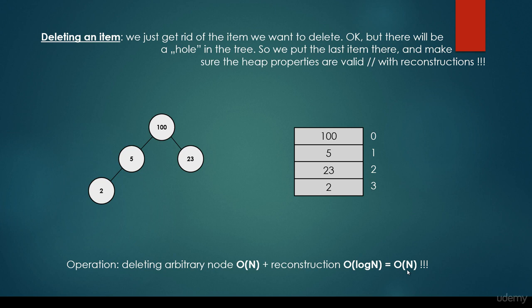Basically, we usually don't implement removing an arbitrary item from a heap data structure. Usually the remove operation is going to get rid of the root node, no matter what. This is why heaps came to be — this is the purpose of this data structure. Because we know that the maximum or the minimum item is at the root node, and usually we would like to get rid of the maximum or the minimum item. So that's why removing the root node is going to have logarithmic running time, while removing an arbitrary node in a heap data structure is going to have linear running time, because we have to make a linear search in the one-dimensional array in which we store the items. So that's all about the removal operation in a heap data structure.